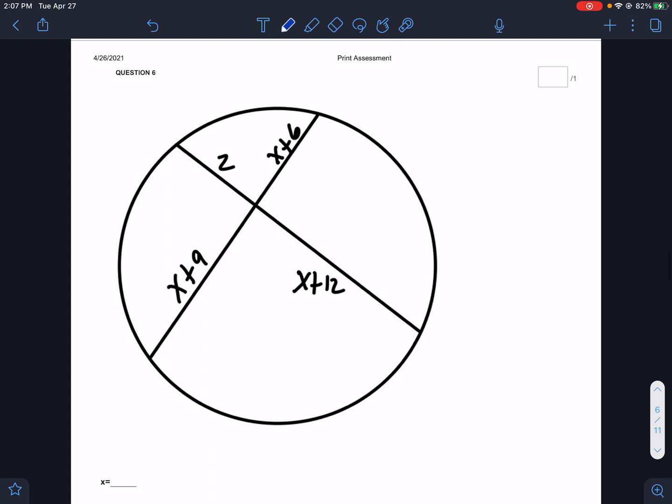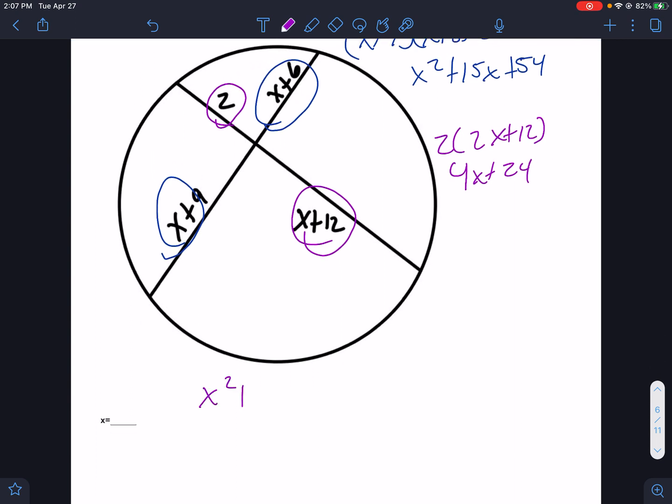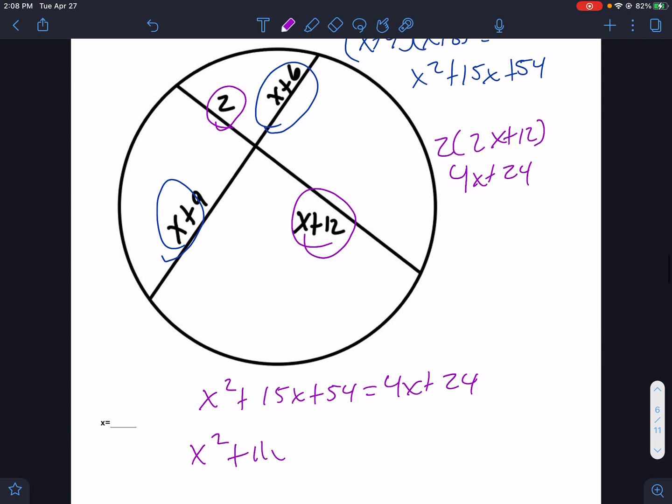We've got some chords going on. So part times part. So those two parts, that would be x plus 9 times x plus 6. That's x squared plus 15x plus 54. Then we have part times part would be 2 times x plus 12. And that would be 4x plus 24. So we end up with x squared plus 15x plus 54 equals 4x plus 24. Make one side 0. We would have x squared minus 4x would be 11x minus 24 would be 30. Feel like I messed up.